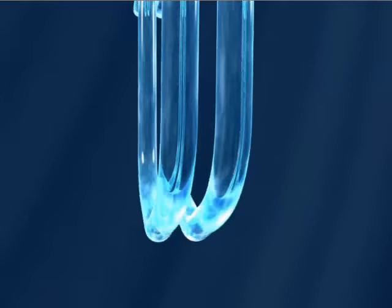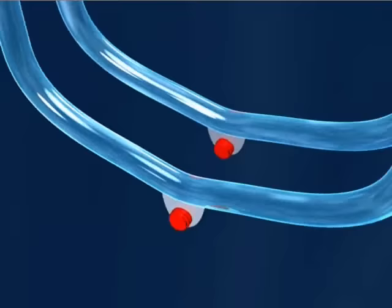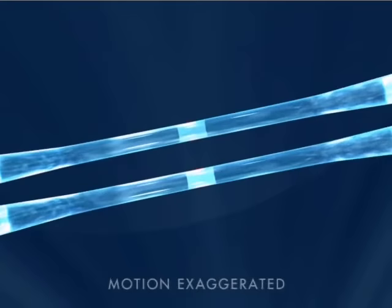This is achieved by exciting the measuring tubes with an electromagnetic exciter in its first resonance frequency. When no mass is flowing, the two tubes oscillate symmetrically.